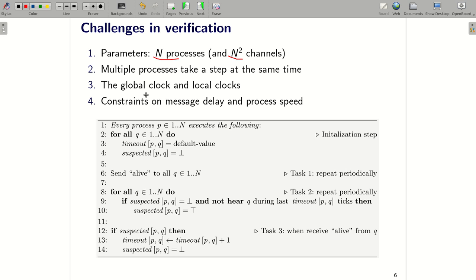Finally, there are implicit time constraints on message delay and process speed. For example, if you consider the asynchronous model. In this model, there is no bound on message delay. So it may be that a correct process never receives a message from another until the timeout expires. So in the asynchronous model, this algorithm doesn't work well. So in our paper, we avoid the last challenge by considering only the synchronous model.